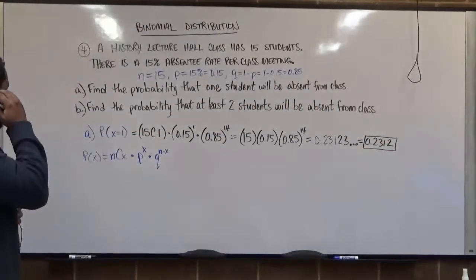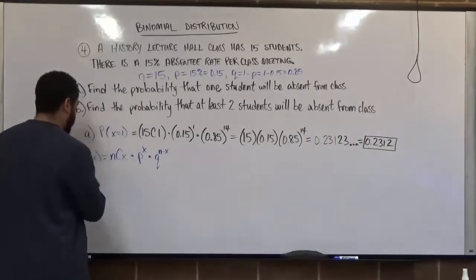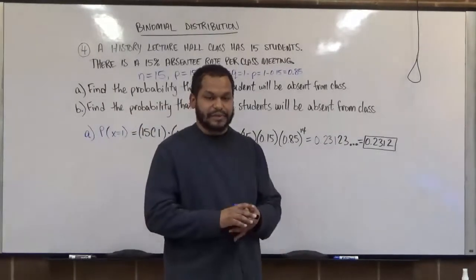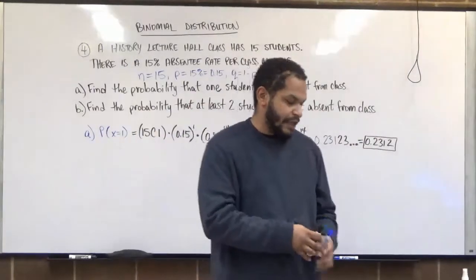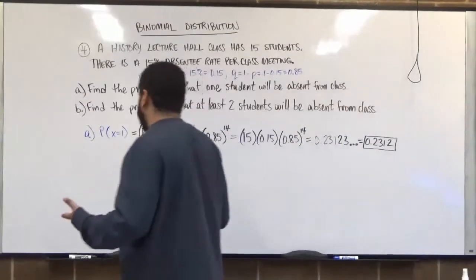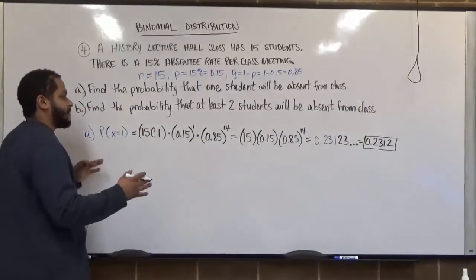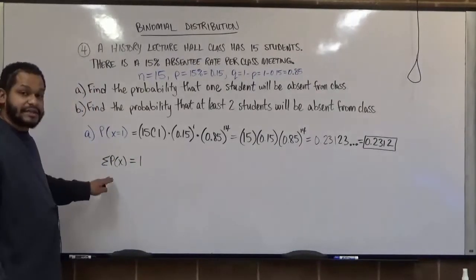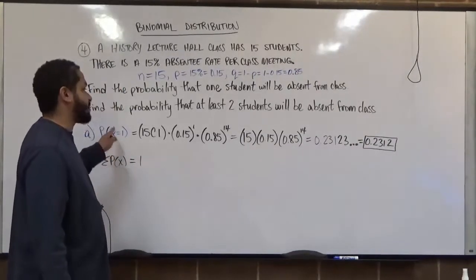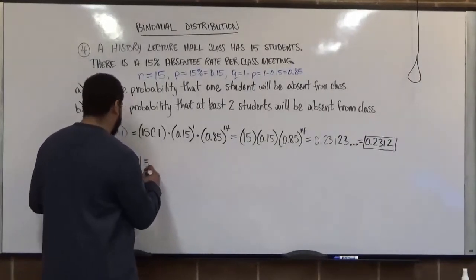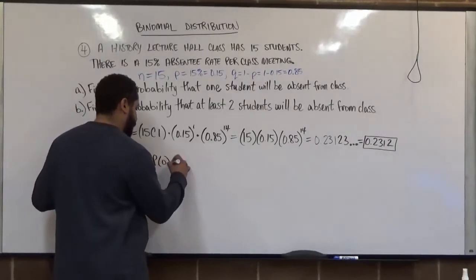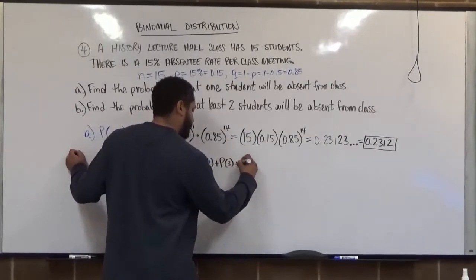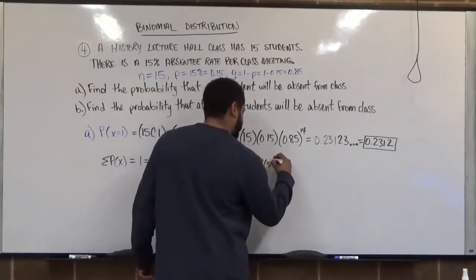That covers the first part of the problem. For the second component, it's important to know that the sum of all probabilities always equals 1. The probabilities run from X equals 0 to X equals 15. So the probability of 0 plus the probability of 1 plus the probability of 2, and so on all the way up to the probability of 15, will all be equivalent to 1.